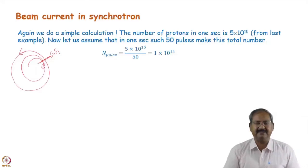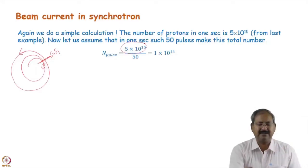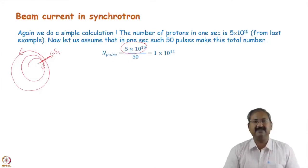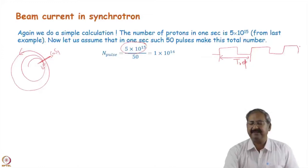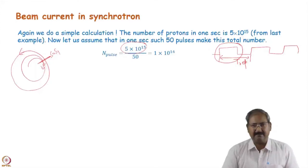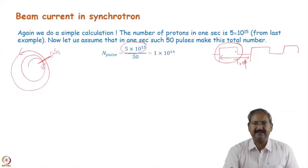Consider the same number of protons as in the previous example — 5×10^15 — but suppose there are 50 such pulses. There are pulses that repeat after some time T-REP; after T-REP again a pulse comes. This pulse can be injected into the synchrotron, compressed by the multi-turn injection mechanism, and then ejected to the target. At a particular instant, only one pulse will be inside the ring.